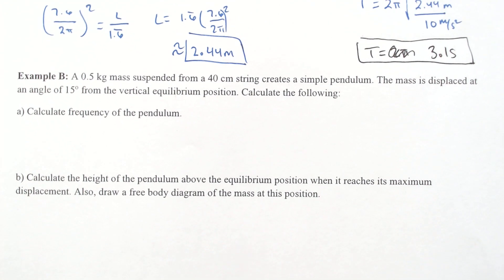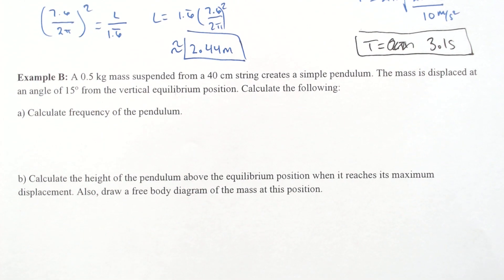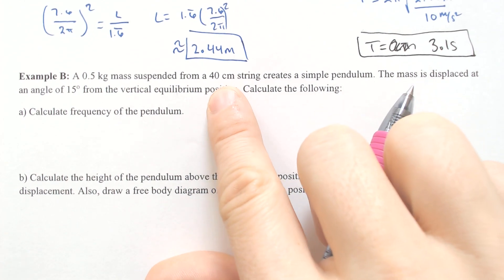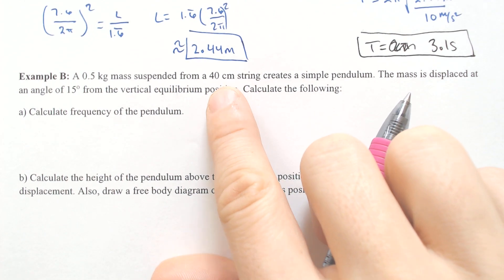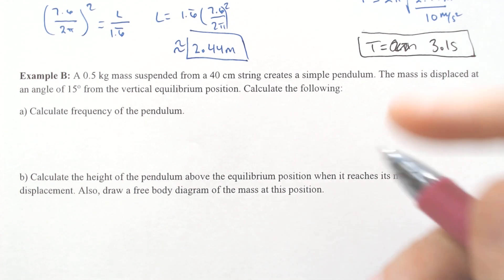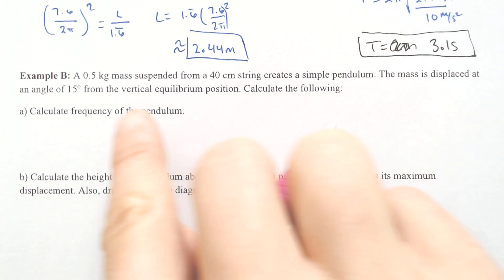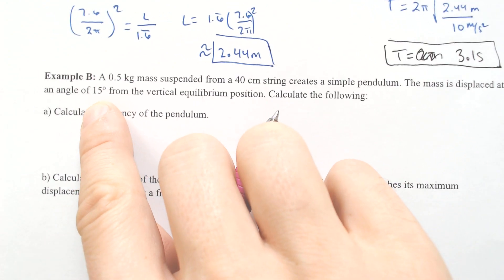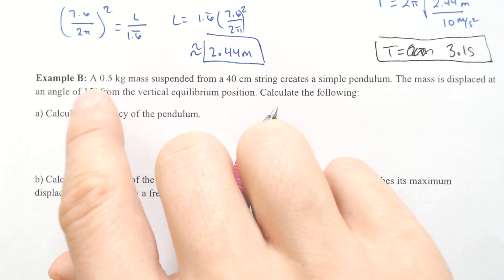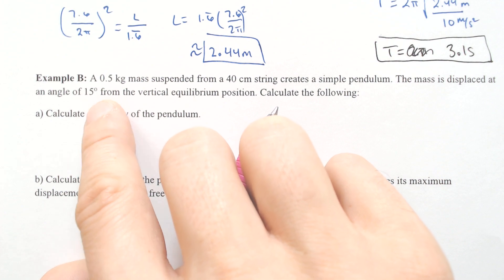In general, you don't need the mass to find the period. 40 centimeters is annoying — we'll have to convert that into meters. The displaced angle is also a little annoying because we need to figure out some other things with that angle before we can keep going.